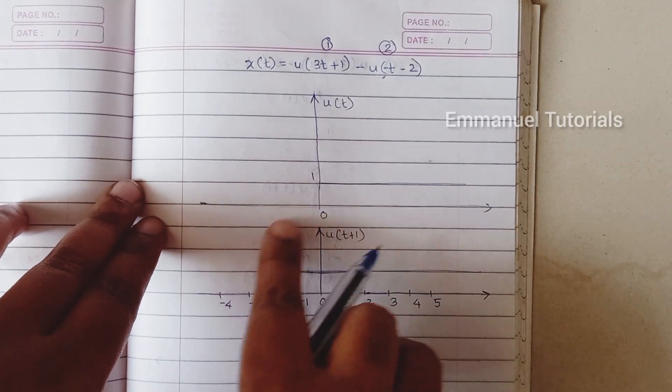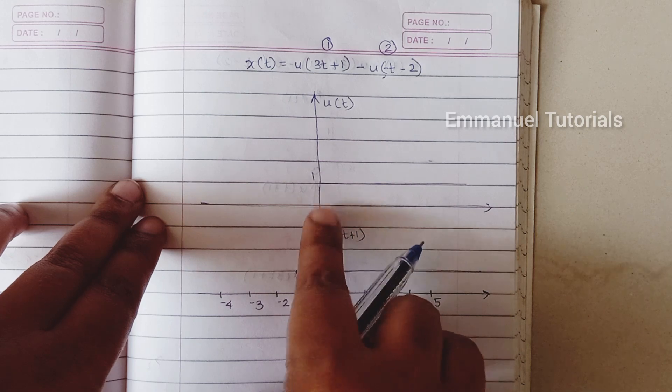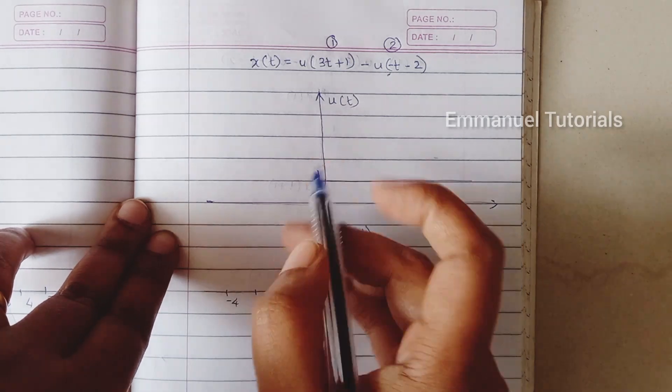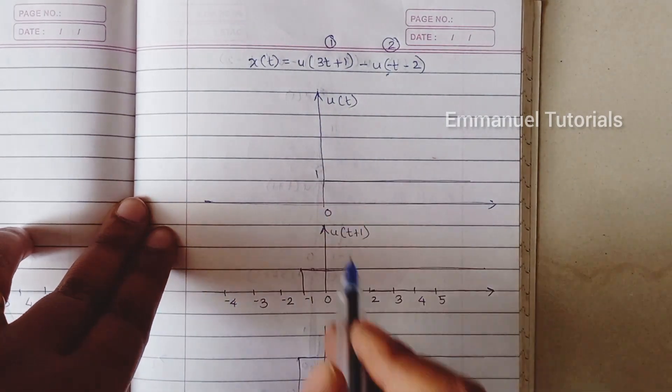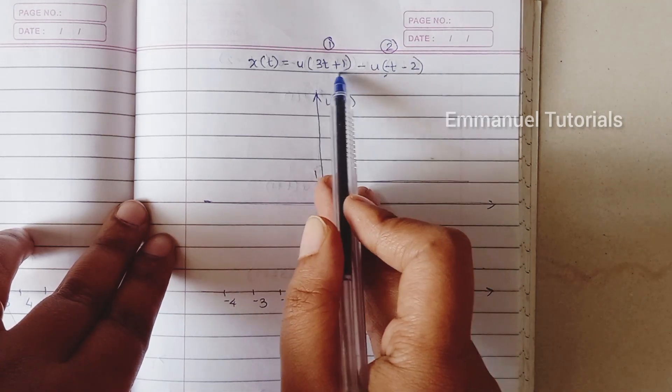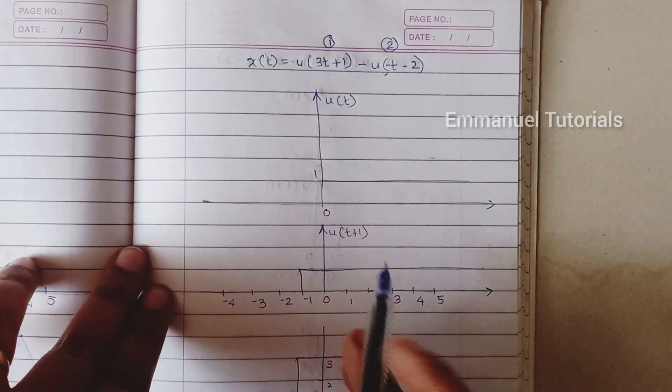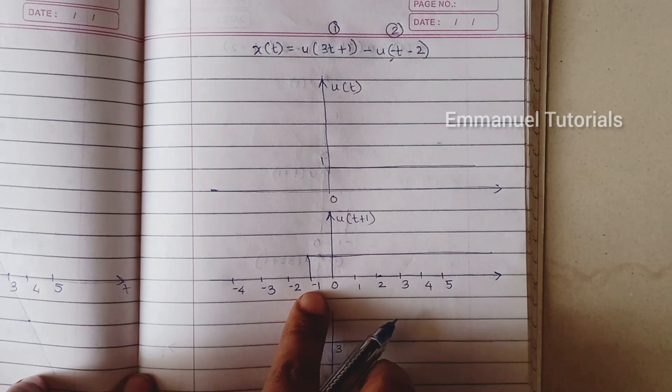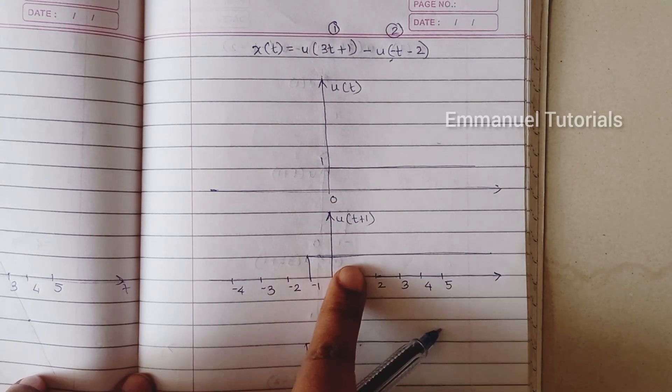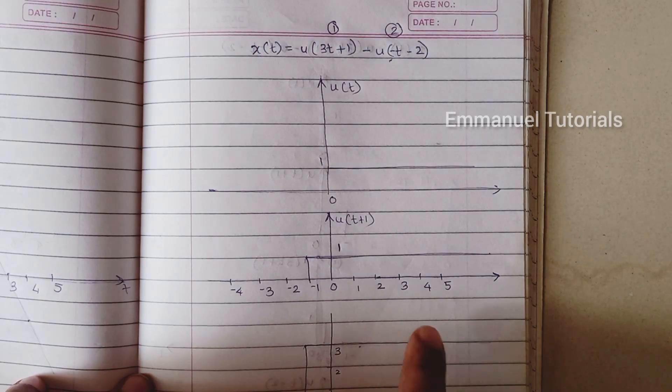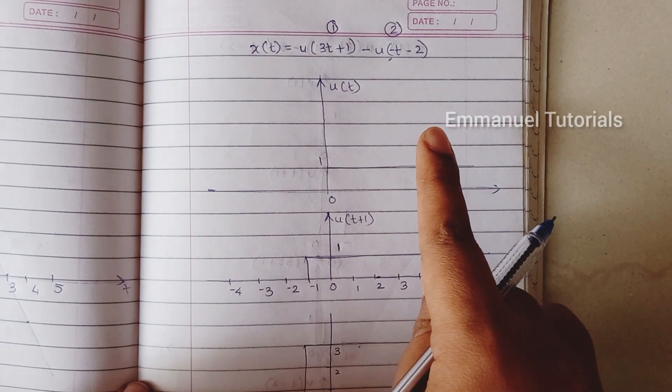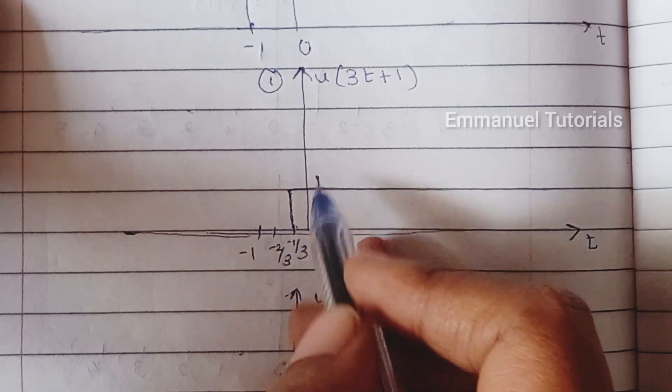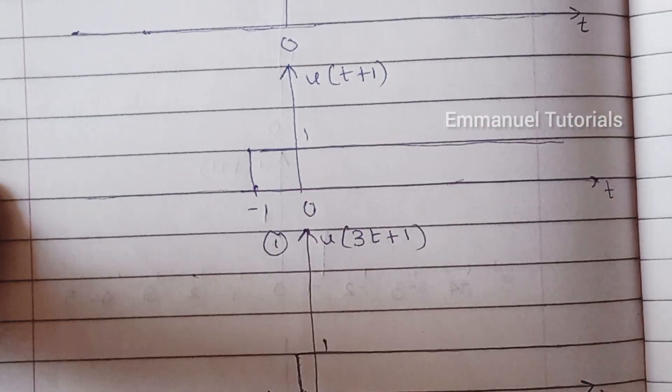So first, you know unit step signal is a signal with amplitude 1 which starts from t equal to 0. To get u of 3t plus 1, first using the precedence rule we will be doing shifting. So shifting meaning I'll be advancing the signal by 1. So advance meaning shifting the unit step signal to the left by 1, which means this signal will start from minus 1 with amplitude 1, and u of 3t plus 1 will be the time scaled version of u of t plus 1.